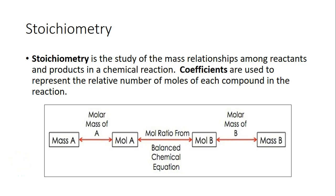In this video, we're going to talk about stoichiometry and what that means. Make sure that you watch the mole ratio video before watching this video. The word stoichiometry is a fancy word for measurement of amounts — 'metri' means measurement and 'stoichio' means amount. So stoichiometry is studying the relationships between reactants and products in terms of mass or the amount of stuff there is.